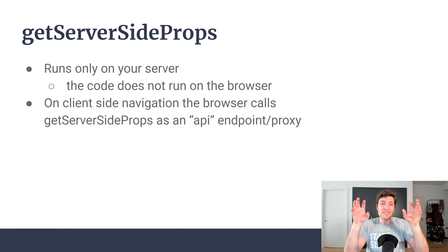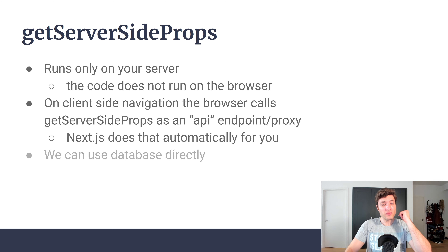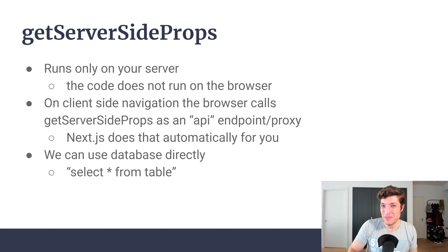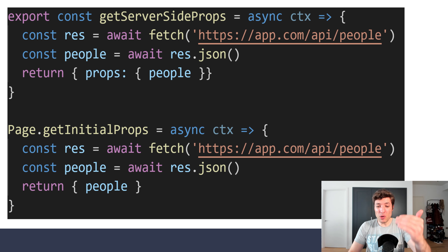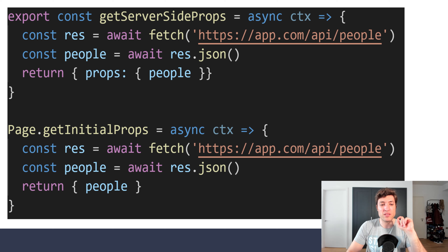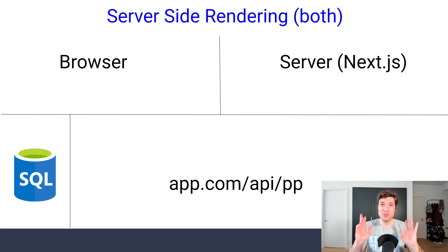So in the end, you will have GetServerSideProps running on every single client-side navigation, with the added advantage that it runs on your server — which allows you to do things like calling a database directly and doing a SELECT * FROM a table. The two codes look super similar: in both we are fetching an API and returning people from that API. Just keep in mind that for GetServerSideProps, we need to wrap the return value in a props object.